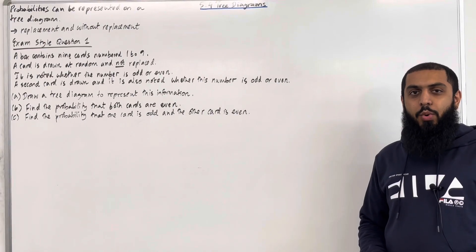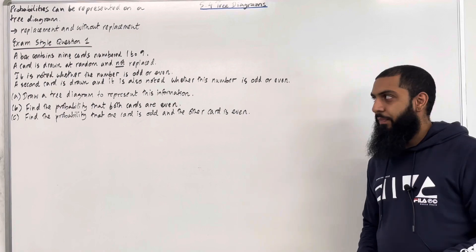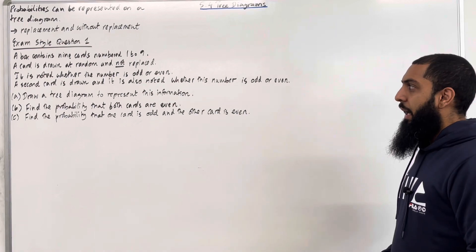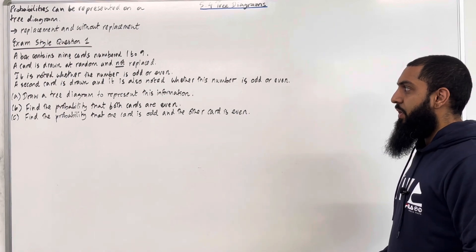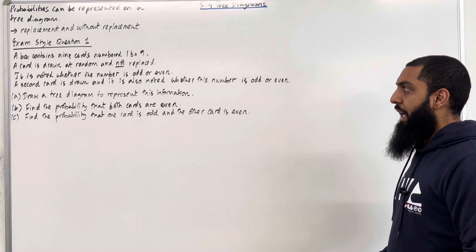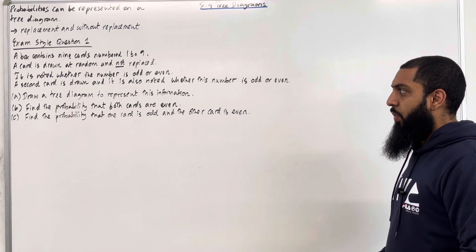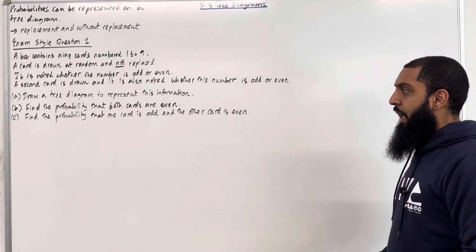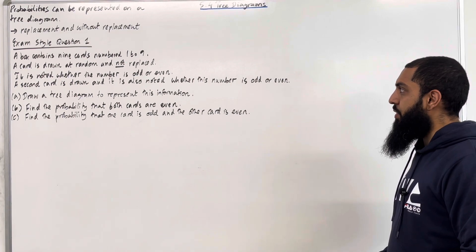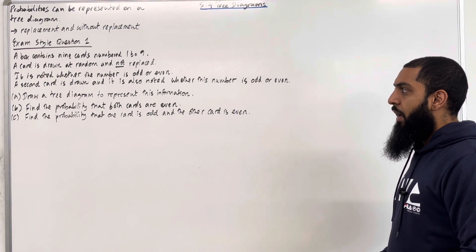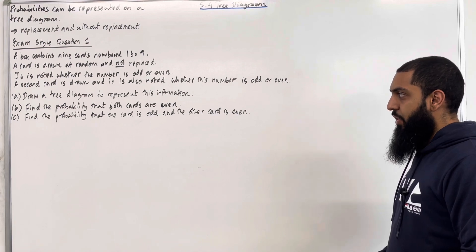Let's have a look at exam style question 1. A box contains 9 cards numbered 1 to 9. A card is drawn at random and not replaced. It is noted whether the number is odd or even. A second card is drawn, and it is also noted whether this number is odd or even. Part A: draw a tree diagram to represent this information.